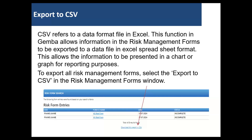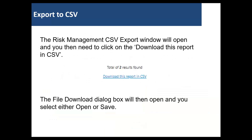This allows the information to be presented in a chart or graph for reporting purposes. To export all risk management forms, select export to CSV in the risk management forms window. The risk management CSV export window will open and you then need to click on download this report in CSV.